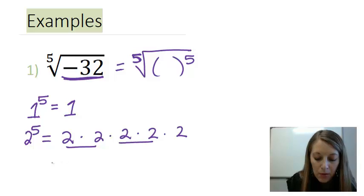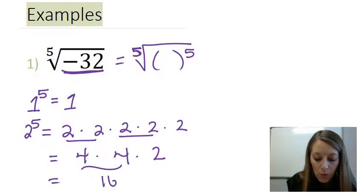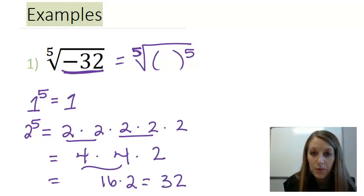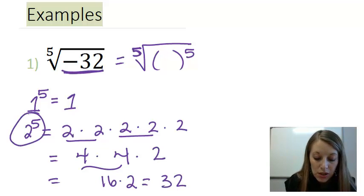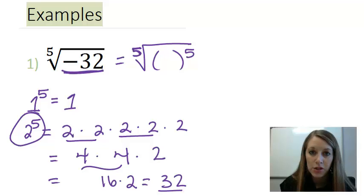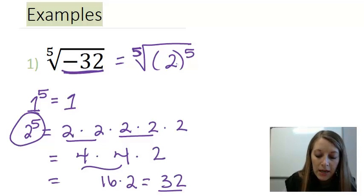If I pick a couple of these and multiply those out, that gives me four times four. And if I multiply that out, that works out to be 16 times two, which gives me 32. So, that means two to the fifth power does give me 32. So that gives me my right base.